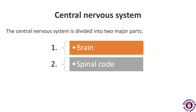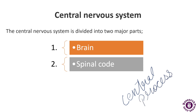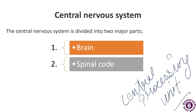The central nervous system is also called the central processing unit of the body. It consists of two main parts: the brain and the spinal cord.